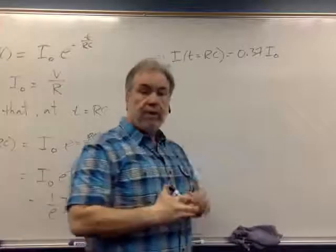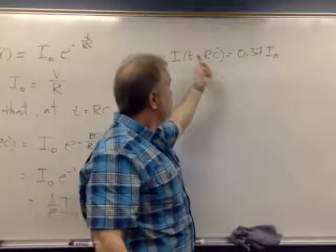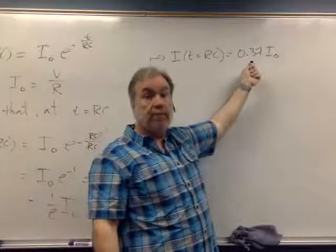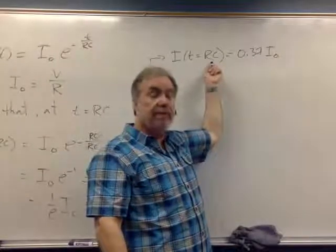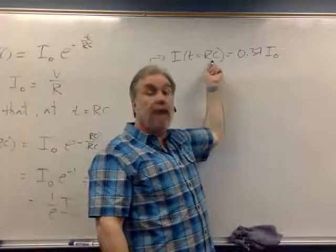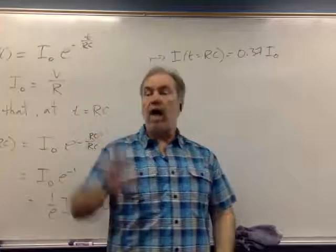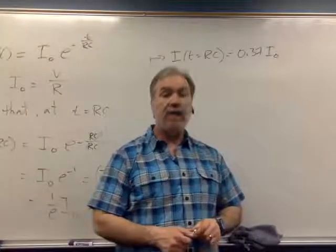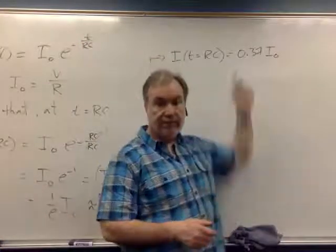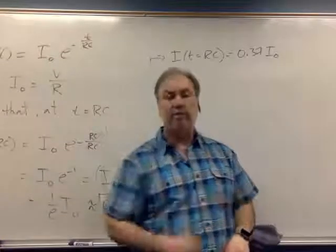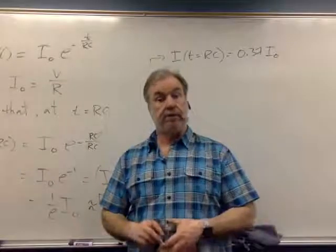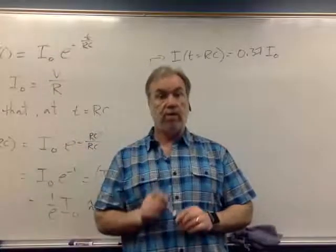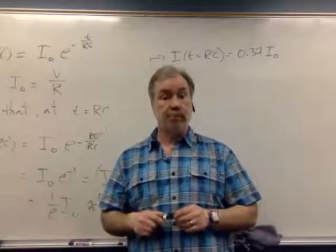And the really important thing about this is that the time that it takes the current to drop from maximum down to just 37% of its initial value is determined by the resistance, it's determined by the capacitance, it's determined by the product of those two things actually. But the resistance and the capacitance we control. I went and picked a resistor out of the box and I picked a capacitor off the shelf and I wired them together with my battery. I can control how rapidly this current decreases by an appropriate choice of resistor and an appropriate choice of capacitor. So I can design my circuit so that the current drops at whatever rate I want for whatever reason I'm building the circuit.